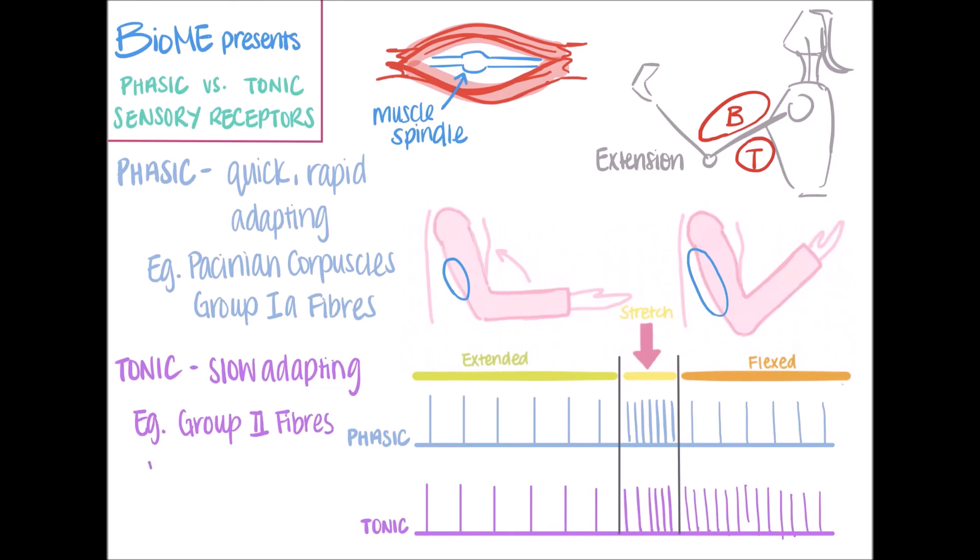These receptors detect how long a muscle is, as the rate of action potential increases as the length of muscle increases. They keep sending action potentials as long as the stimulus is applied.